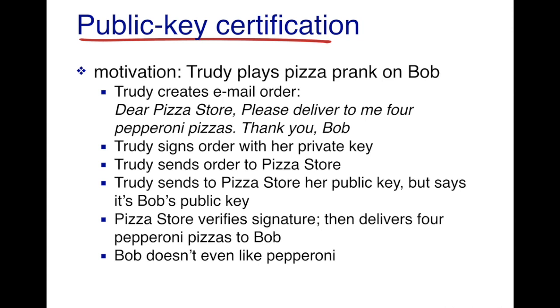Trudy also sends to the pizza store her public key, but says that it's Bob's public key. The pizza store verifies the signature and then delivers four pepperoni pizzas to Bob.